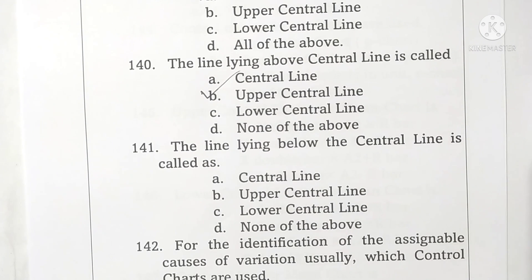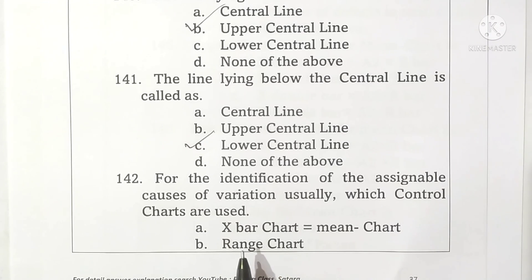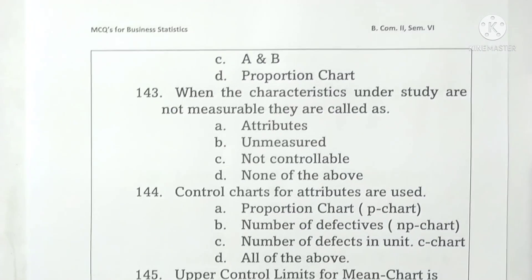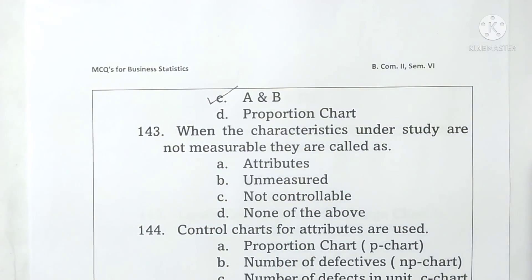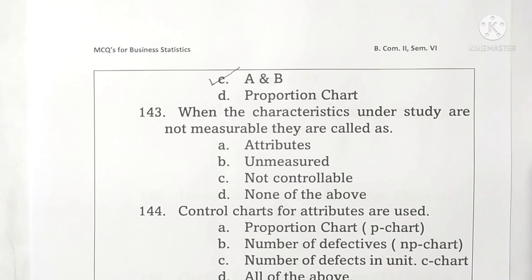Question 141: the line lying below the center line is called the lower control line. Option C is correct. Question 142: for identification of assignable causes of variations, the control charts used are the x-bar chart (mean chart) and the range chart — both A and B. Option C is correct.